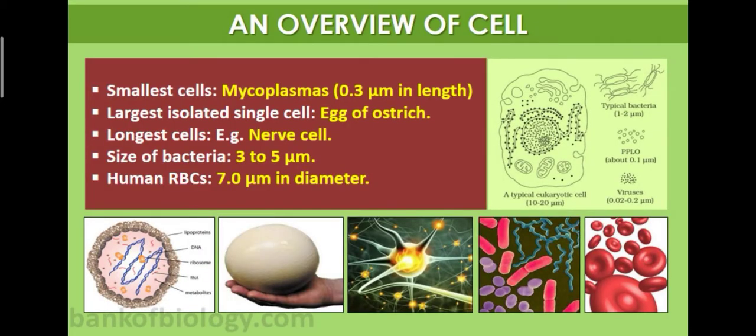The smallest cell is Mycoplasma, at 0.3 micrometers in length. The largest cell is the ostrich egg cell. The longest cell is the nerve cell. The size of bacteria is 3 to 5 micrometers, and human RBCs are 7.0 micrometers in diameter.